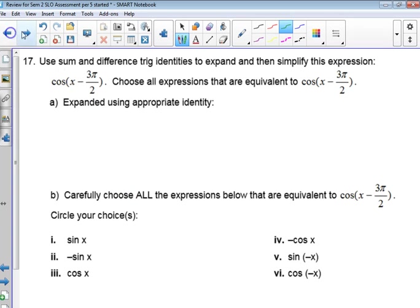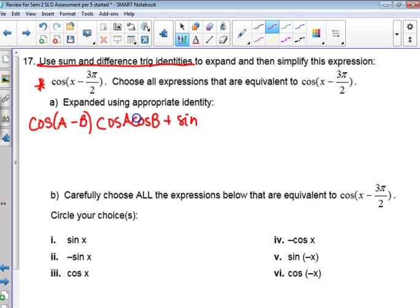Alright. This one is using sum and difference identities. It says right up here. Use sum and difference trig identities. Okay. You don't have to copy this on here. But can somebody find me the one that says cosine A minus B? What does it say? Okay. Cosine A, cosine B. Is that right? And plus sine sine. Did I hear you right? Okay.